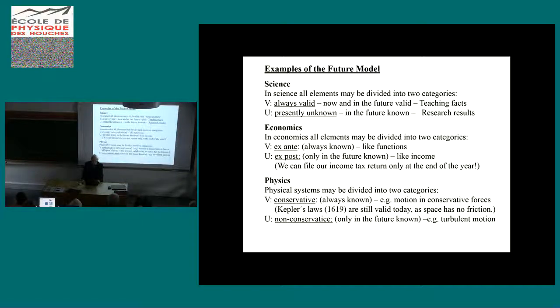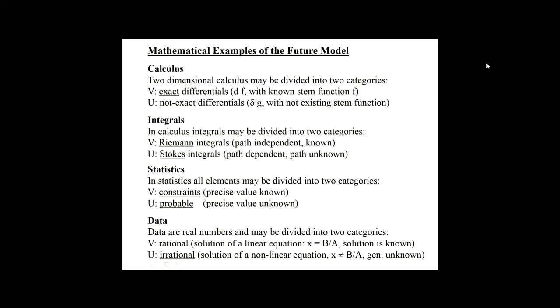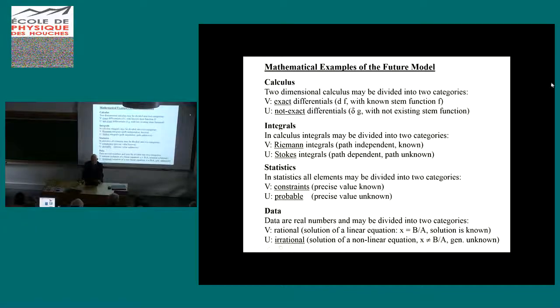In physics, systems may be divided into conservative, always known like motion in conservative forces, and non-conservative motion only known in the future like turbulent motion in the weather. We also have mathematical examples: exact differential forms with a known stem function and not exact differential forms which do not have a stem function.